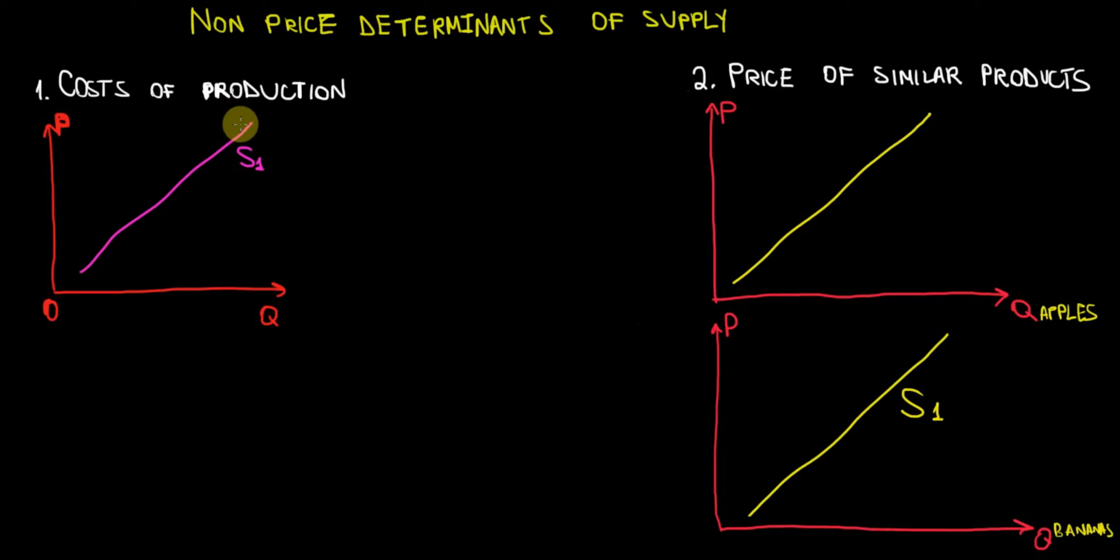Cost of production - how can cost of production determine a shift of the supply curve? Suppose that cost of production increase. When cost of production increase, that means for a given level of quantity of products on the market, the price has to be higher to offset the increase in the cost of production.